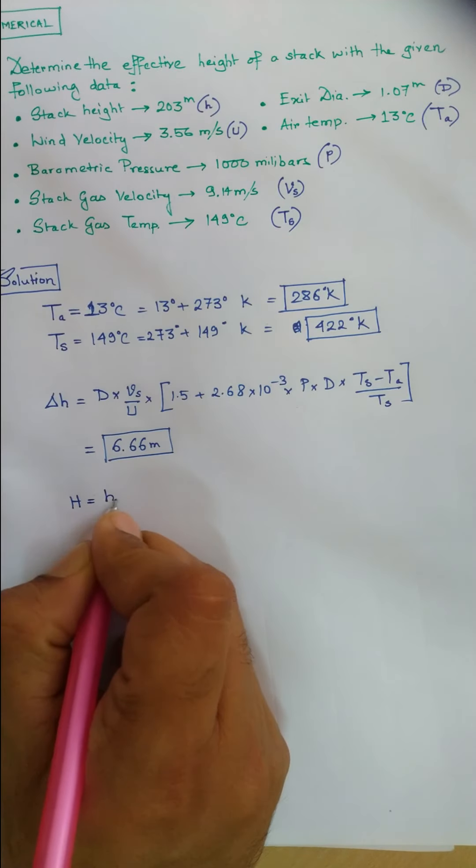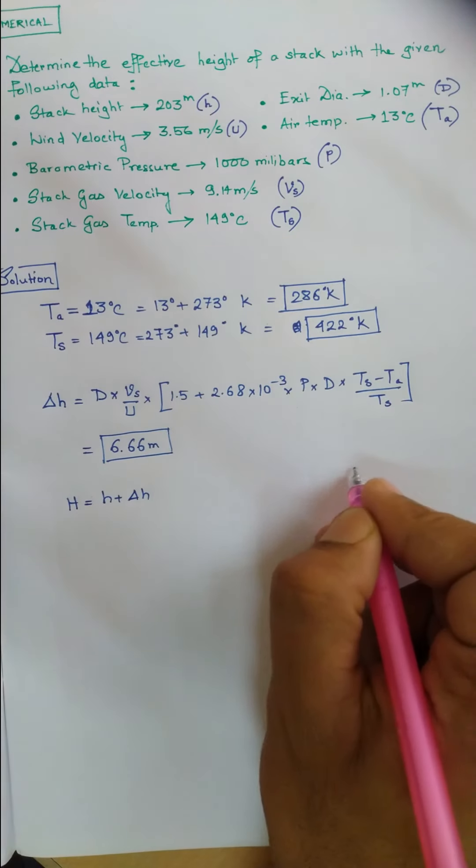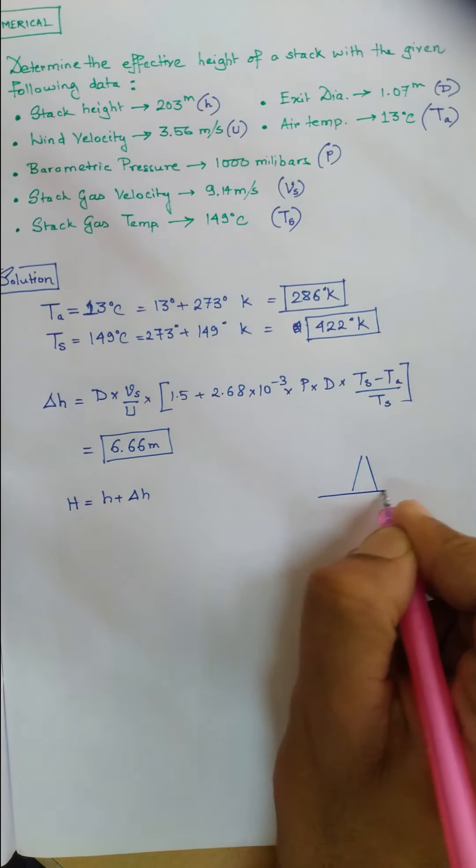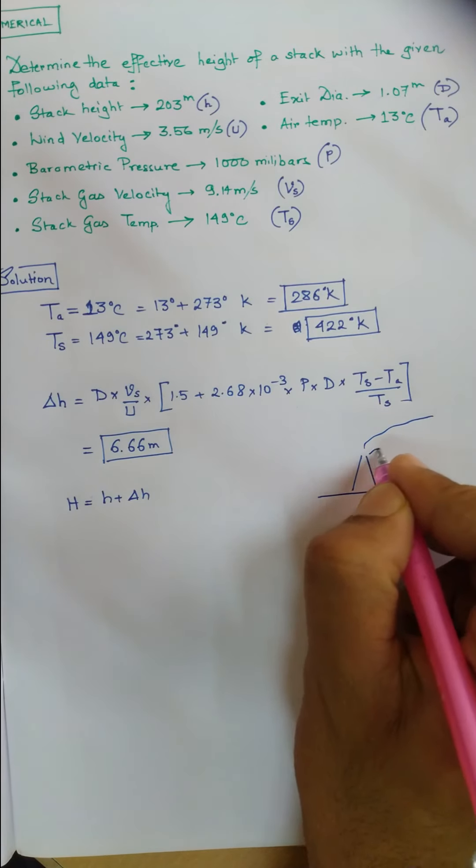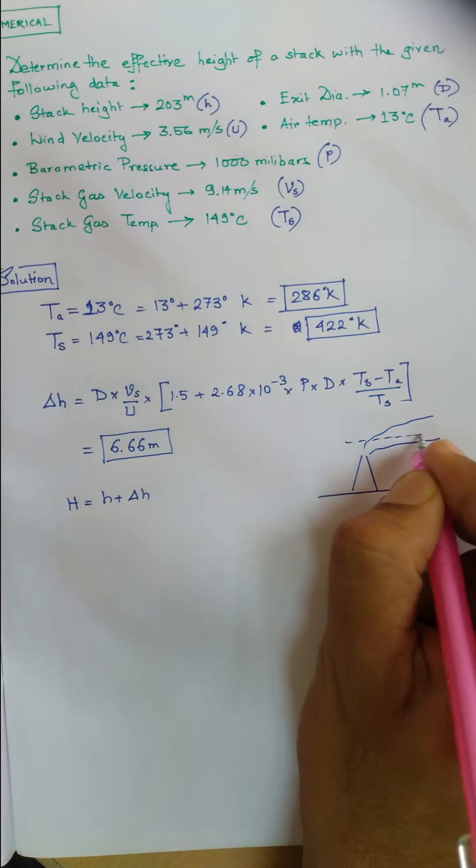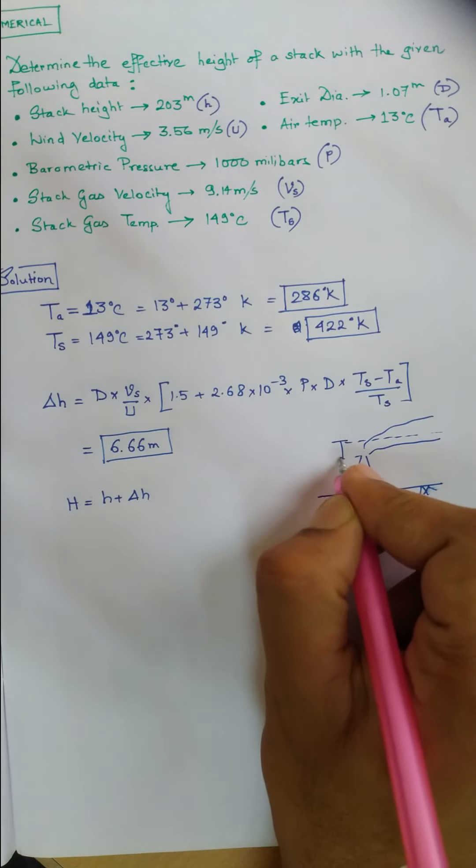The effective height H is h plus delta h. This is the stack, this is the plume, and this is the centerline. This one is your delta h.